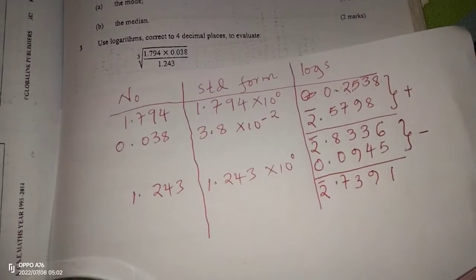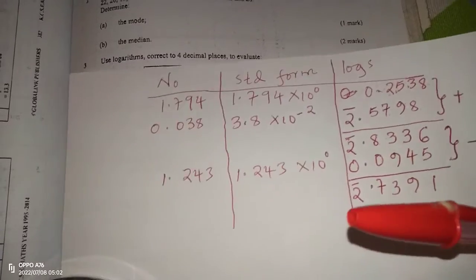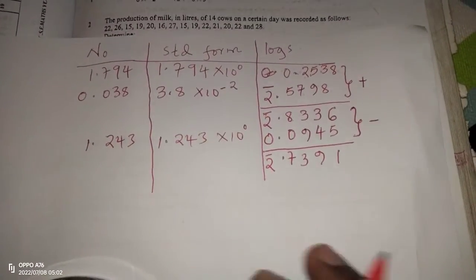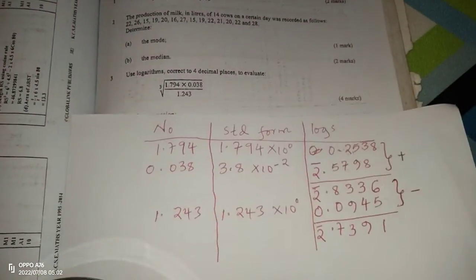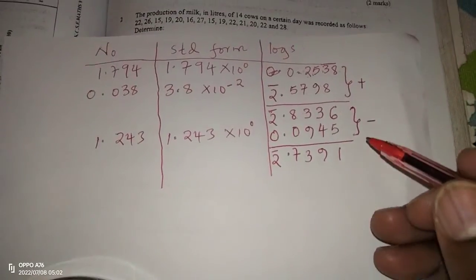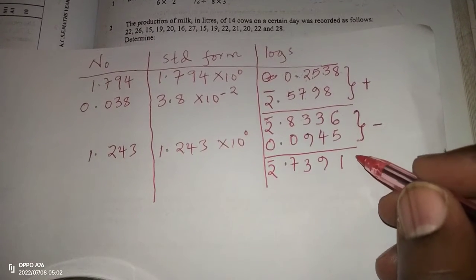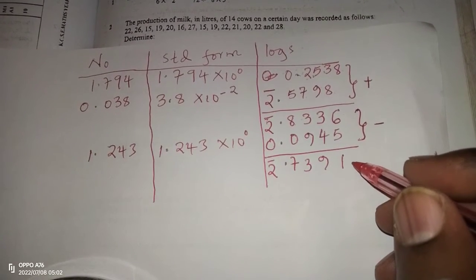Now after getting the logarithms, we have carried out the operations. There is a cube root sign, an overall cube root sign, which means on the overall logarithms, we're going to divide by 3, or rather multiply with a third.